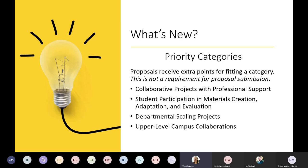Another priority category is student participation in materials creation, adaptation, and evaluation. This is to encourage student involvement in projects, but it isn't meant for involvement at the level of just being in the course and taking a survey. We want to see clear plans to include students in the creation, adaptation, and evaluation of no- or low-cost materials. This kind of student involvement increases the investment students have in the course and increases student agency in the classroom — two points of emphasis in the open education community.